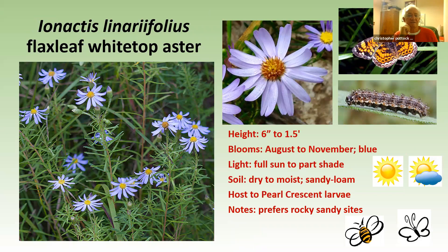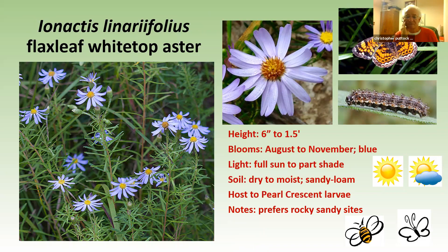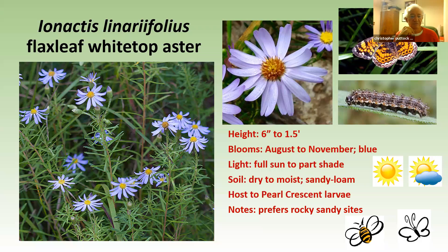Ionactis — the flex-top or white-top — actually has a bluish-purple flower. The pearl crescent larva eats the leaves of this species. You can see the butterfly and the caterpillar there. This species is fairly easy to grow in sandy soil, but we've had a lot of difficulty with insects coming and eating the seed before we can collect it. It's also called stiff aster.